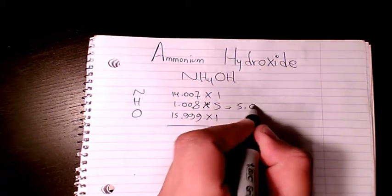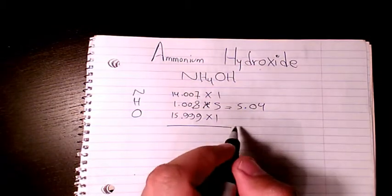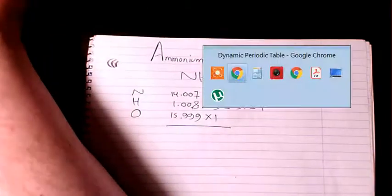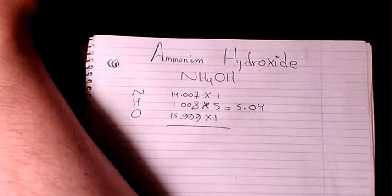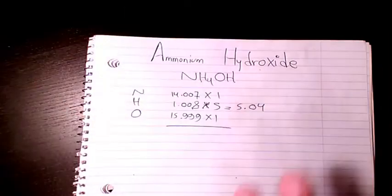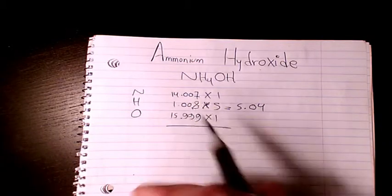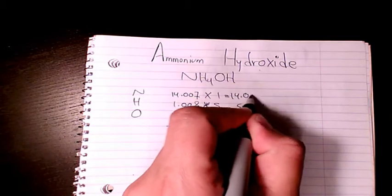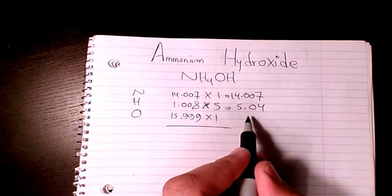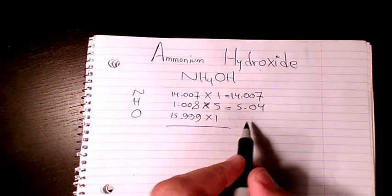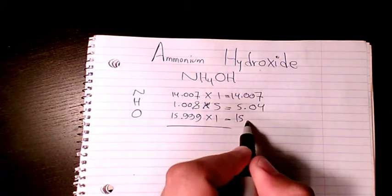Then you add them all, so it's going to be 14.007 plus 1.008... no, so actually it's going to be 14.007 plus 5.04 plus 15.999.